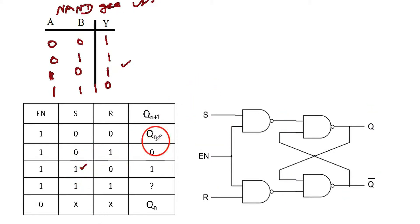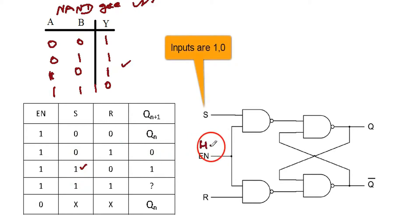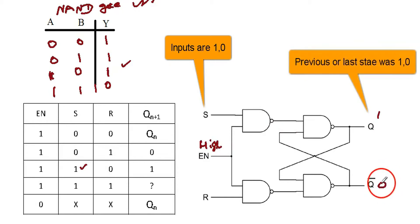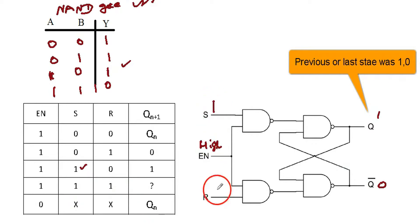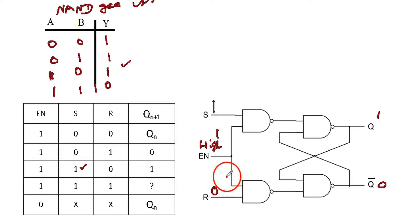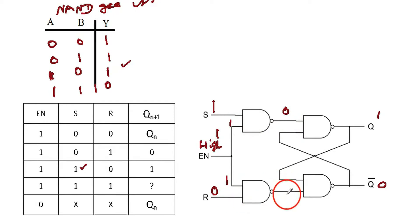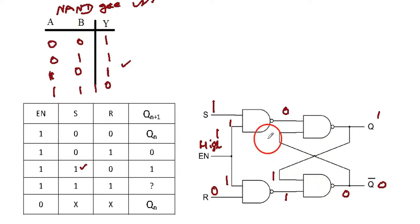Now let the inputs be S=1 and R=0. The clock is high. The previous state is assumed as 1,0. So S=1, R=0, clock is high. This gives 1,1 NAND gate output 0; and 0,1 NAND gate gives 1. Then 0,0 NAND gate gives 1 — that's again a stable state. Q equals 1 if S equals 1.